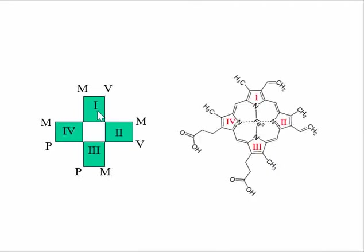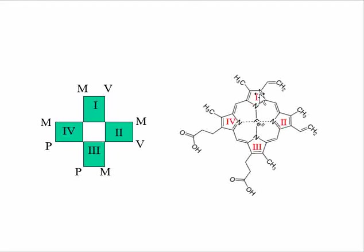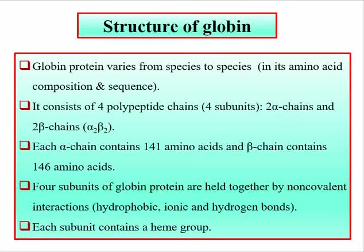In the four pyrrole rings you can find methyl, vinyl, methyl, vinyl, methyl, propionate, and propionate methyl groups present. This is the heme B structure — the heme part of hemoglobin. Now we will look at the globin part of hemoglobin.